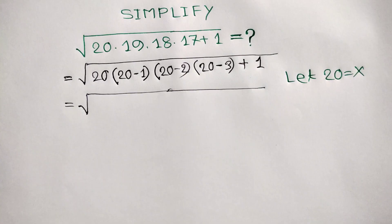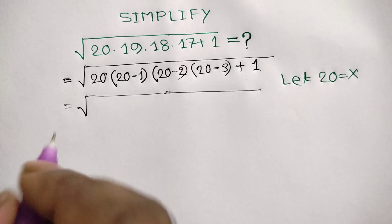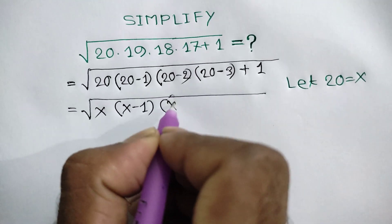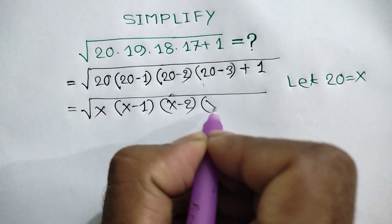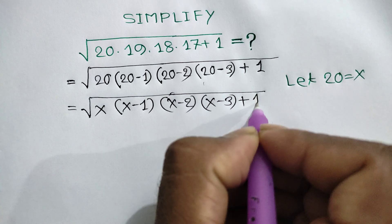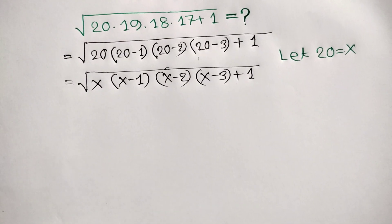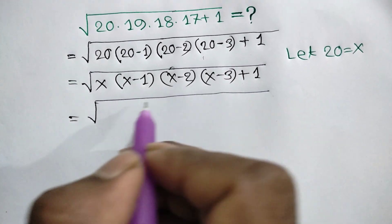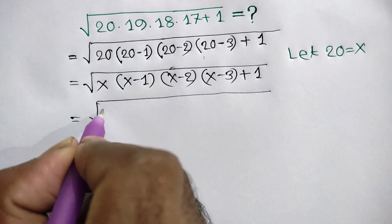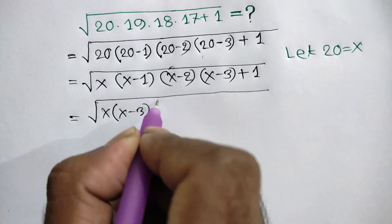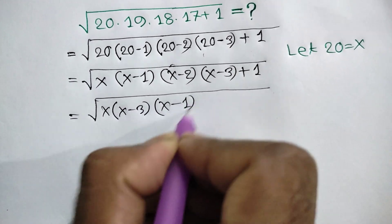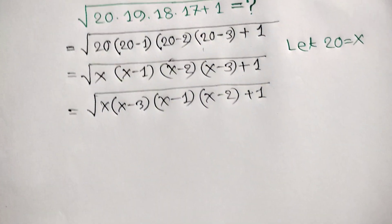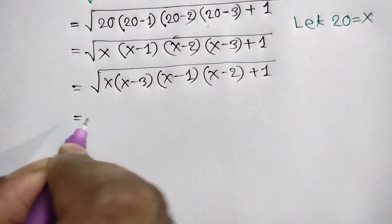Let x equal 20, so we can write: square root of x times (x minus 1) times (x minus 2) times (x minus 3) plus 1. Now rearrange: x times (x minus 3) times (x minus 1) times (x minus 2) plus 1.